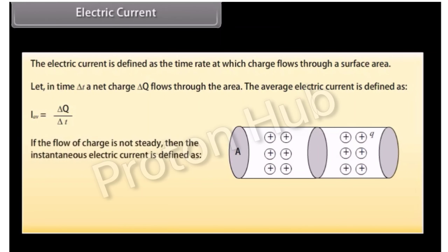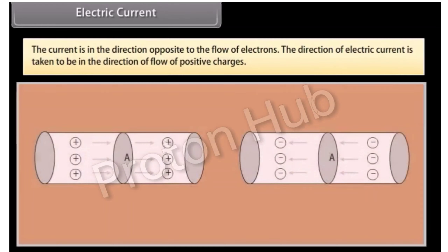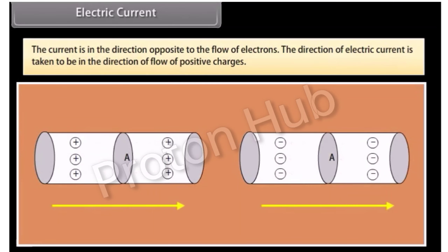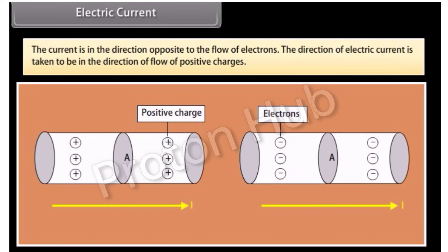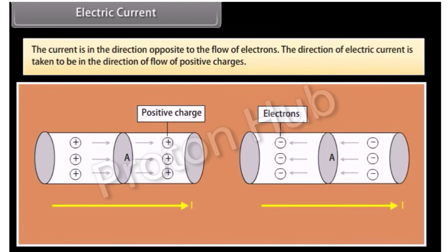If the flow of charge is not steady, then the instantaneous electric current is given by dQ upon dT. The SI unit of current is ampere. The current is in the direction opposite to the flow of electrons. The direction of electric current is taken to be in the direction of flow of positive charges.